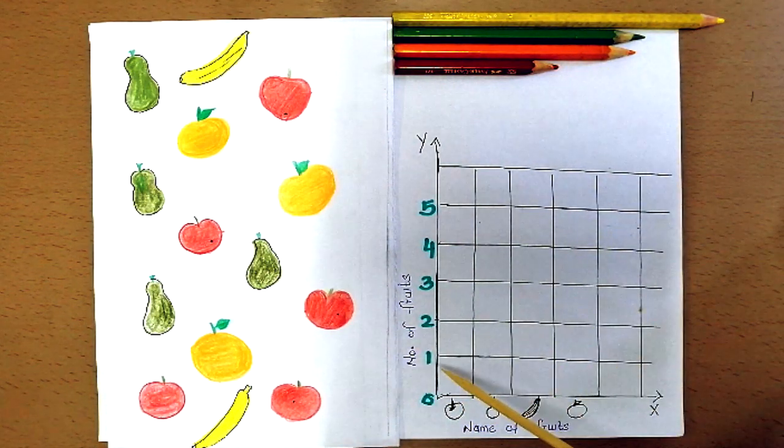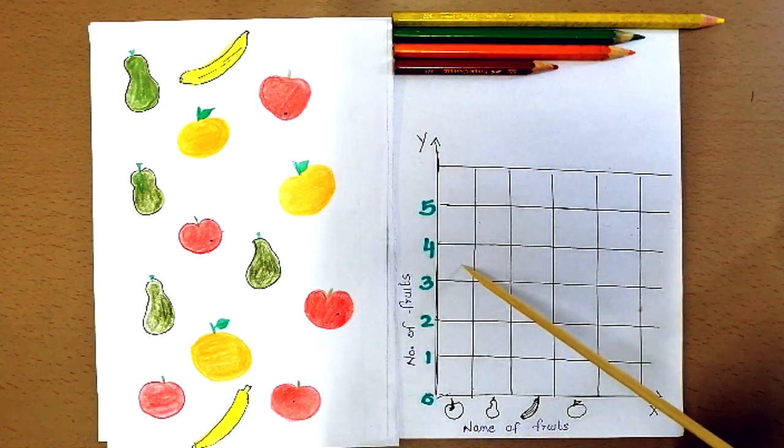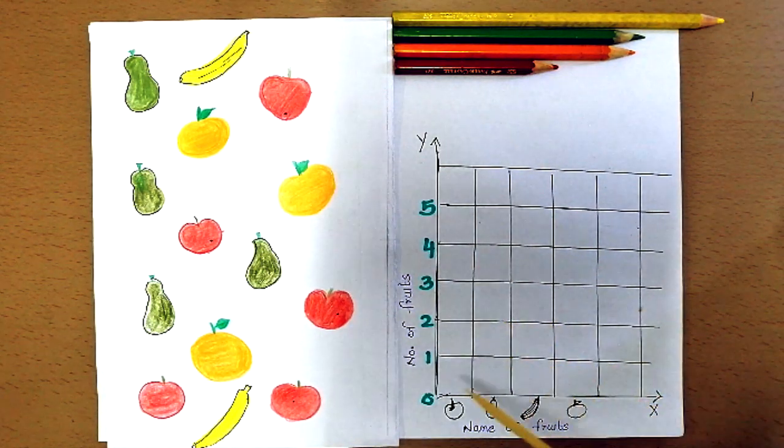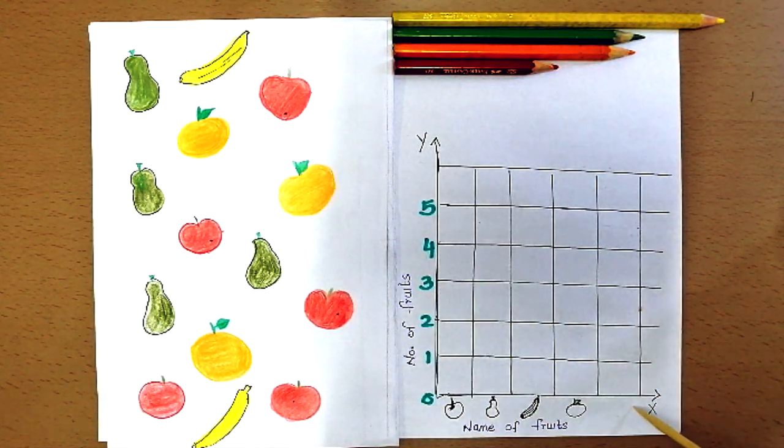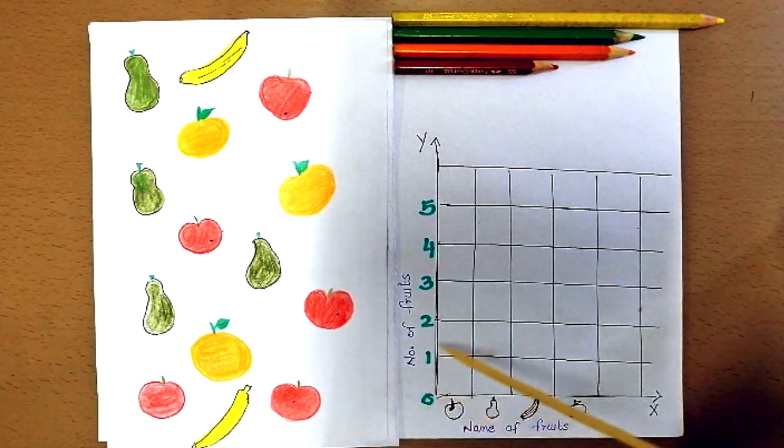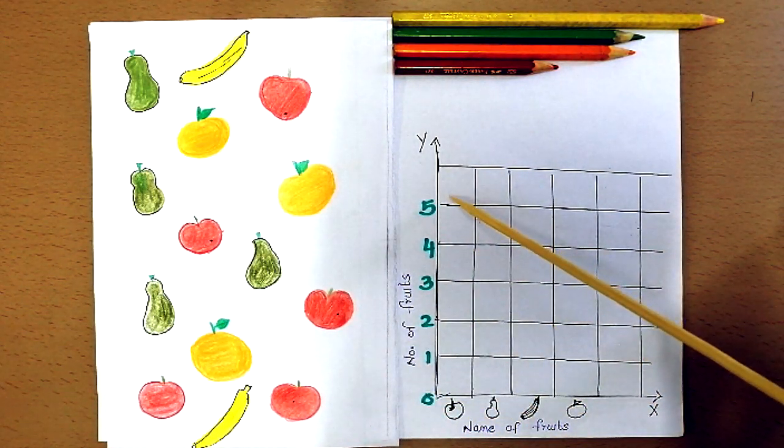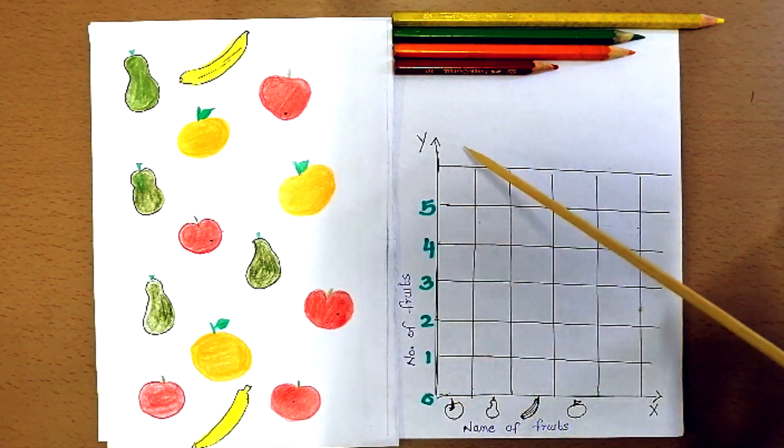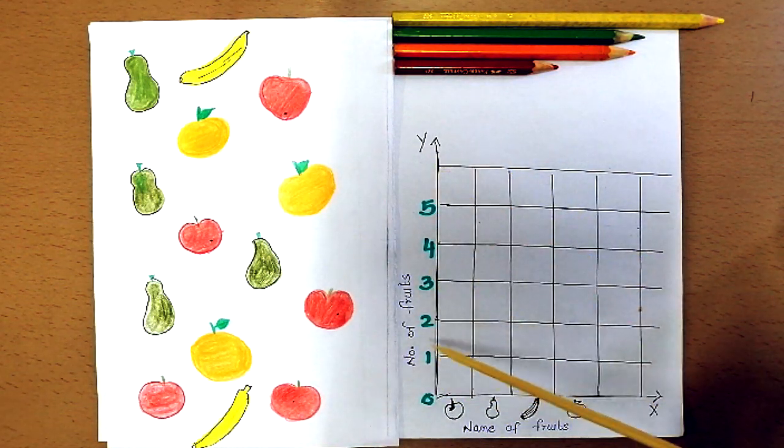You can see that each block has a value of 1. The horizontal line is used to label the data and the vertical line is used to represent the value or number of fruits. It's actually showing you the scale.